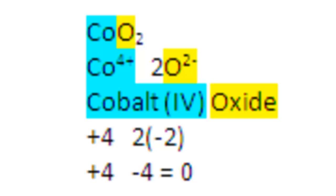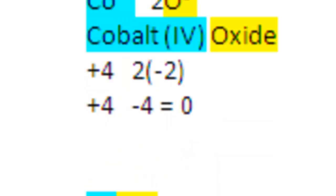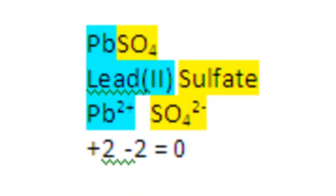There's one cobalt, according to the formula. Therefore, that one cobalt must contribute a positive 4 to make sure the sum of the charges equals 0.